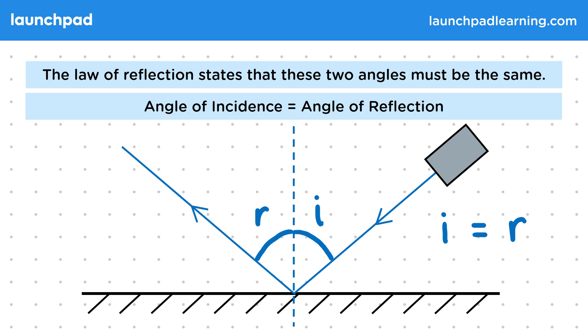So we've seen that it's easiest to demonstrate this rule using mirrors and light rays. But does this mean this is the only time these angles will be equal?